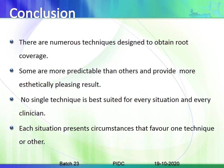To conclude, there are a number of techniques designed to obtain root coverage; some are more predictable than others and provide more aesthetically pleasing results. No single technique is best suited for every situation and every clinician — each situation presents circumstances that favor one technique over another. You must assess the indications and whether the donor and recipient sites are suitable before selecting a technique. In the next class, each technique will be covered in detail; please review the introduction to periodontal surgical flaps and techniques beforehand.